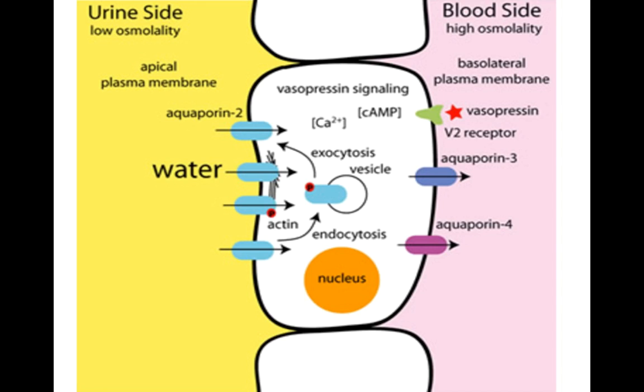In this video, I want to talk about the mechanism of vasopressin or ADH, which is a hormone that's synthesized in your hypothalamus and stored in your posterior pituitary where it's also released.